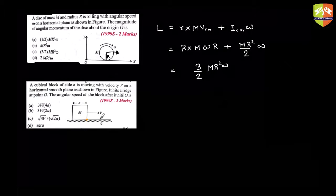There is a force because of this ridge, but the torque due to this force about the corner axis becomes zero when the block hits, because the force passes through the corner itself. So angular momentum about that corner is conserved since there is no external torque due to this ridge force.